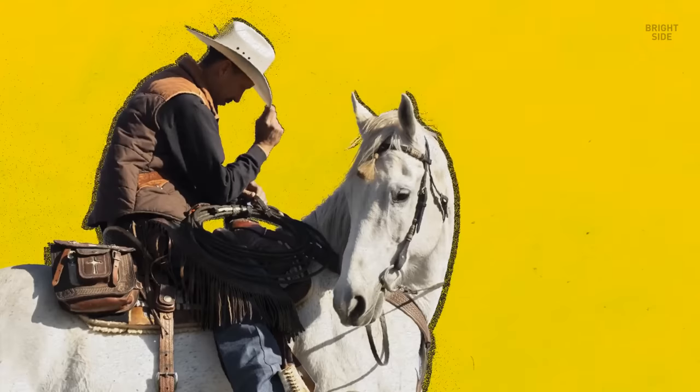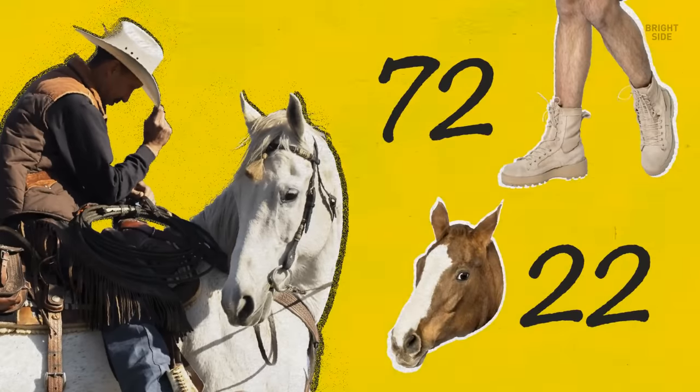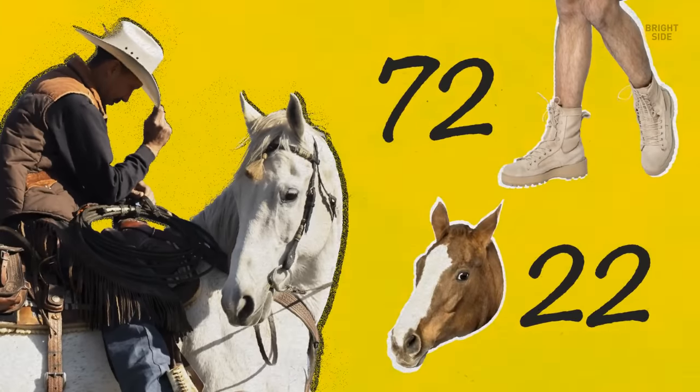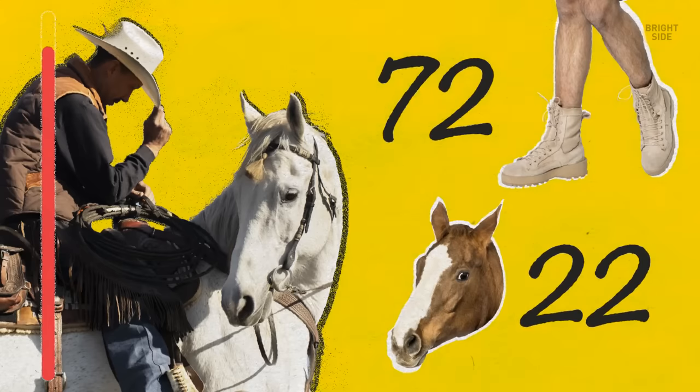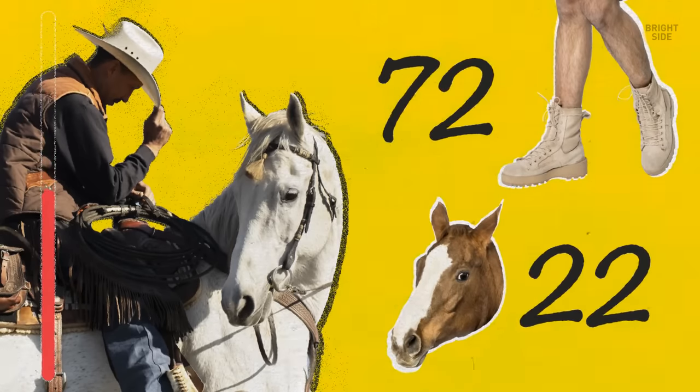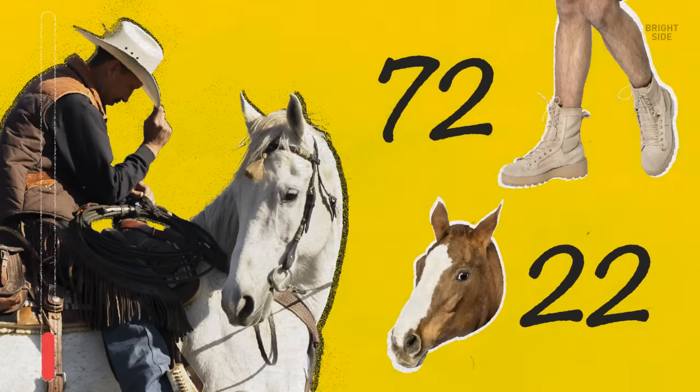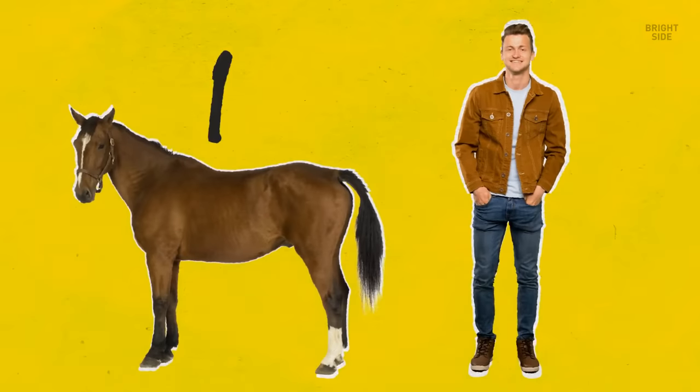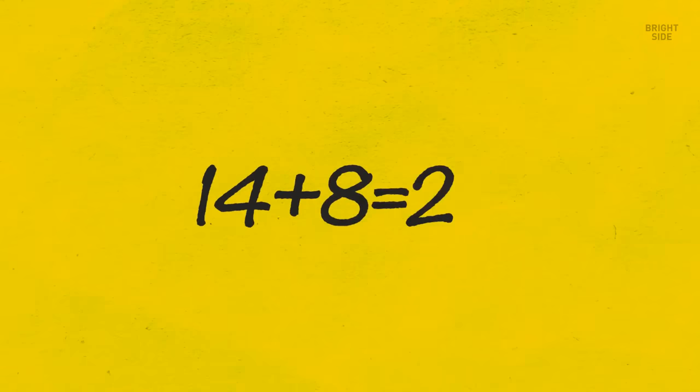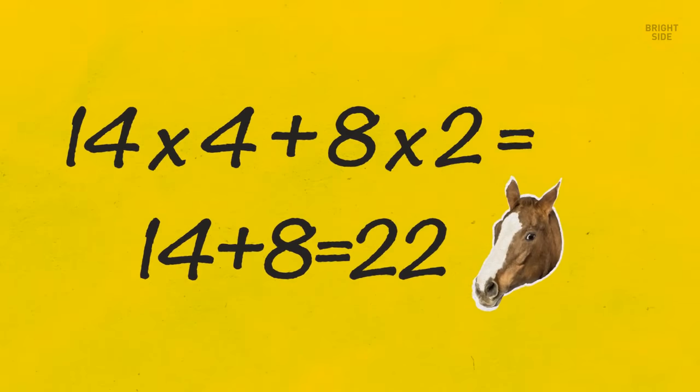Horses and people are gathered in a stable. You know that in total, there are 72 legs and 22 heads. How many horses and how many people are there in the stable? There are 14 horses and 8 people. 14 plus 8 equals 22 heads. 14 times 4 plus 8 times 2 equals 72 legs.